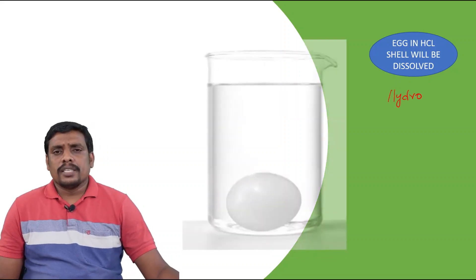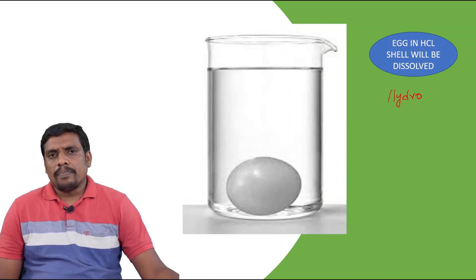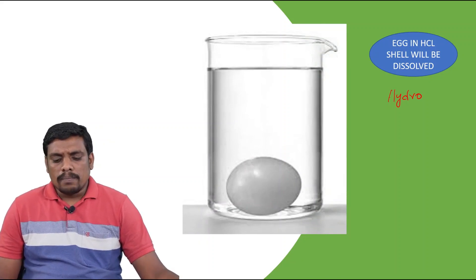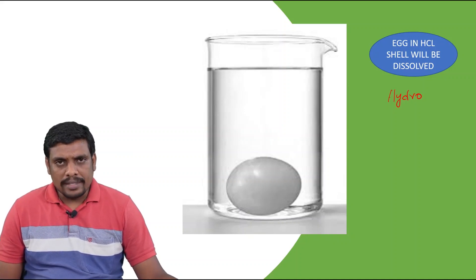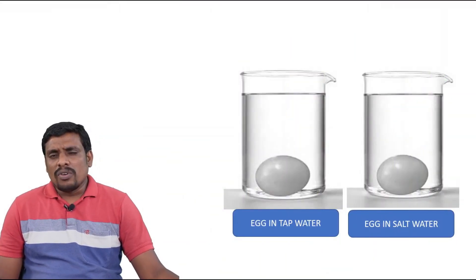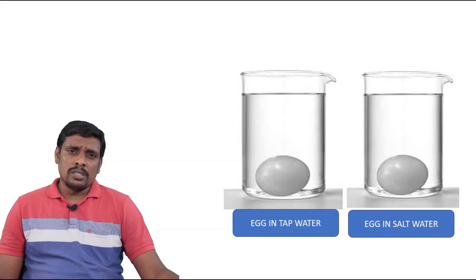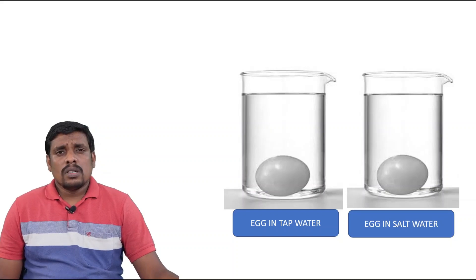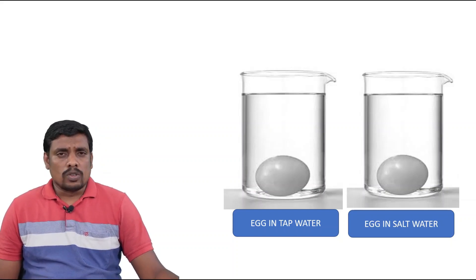If you keep it in hydrochloric acid, what will happen? Completely, the shell will be removed. What is the reason for removing the shell by HCl? Because of its composition, the shell slowly dissolves into the hydrochloric acid.